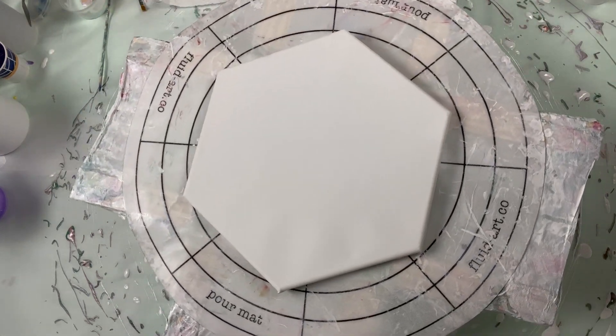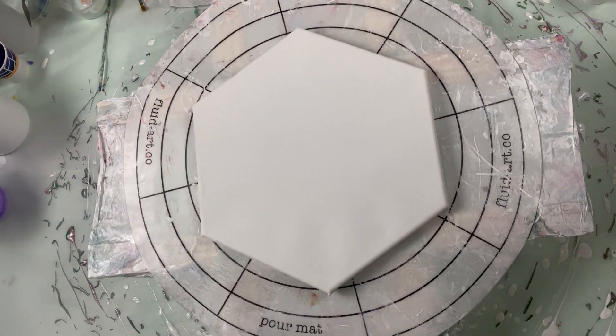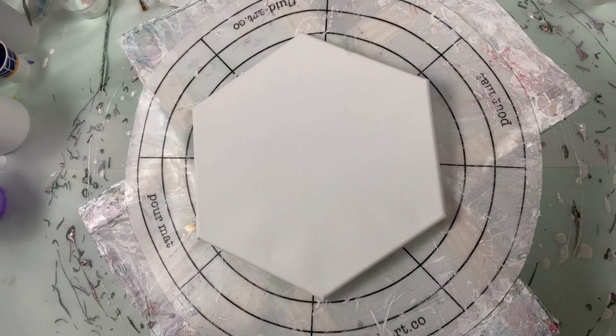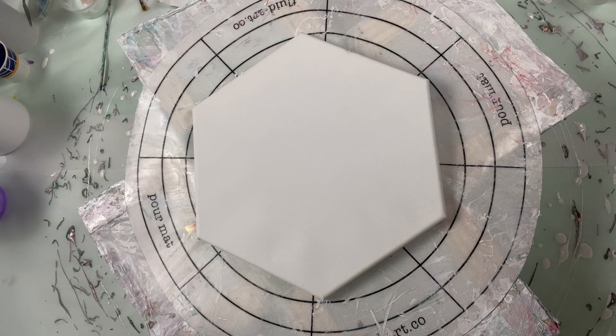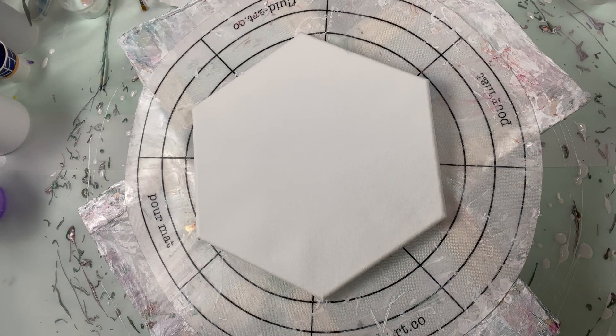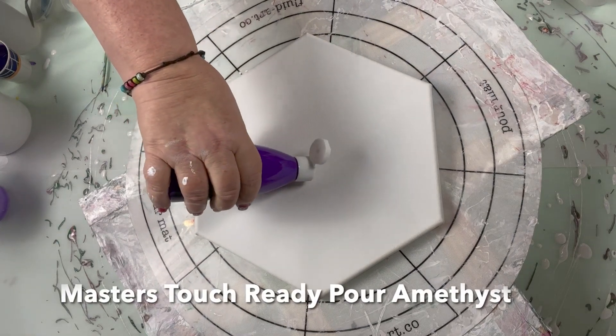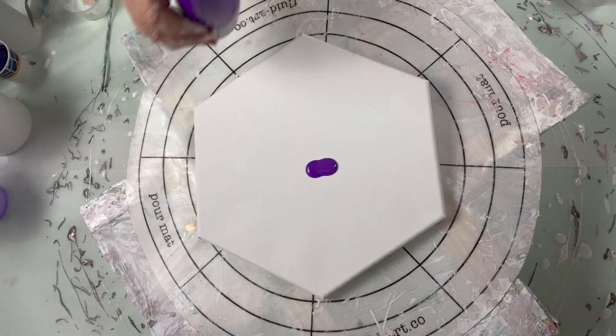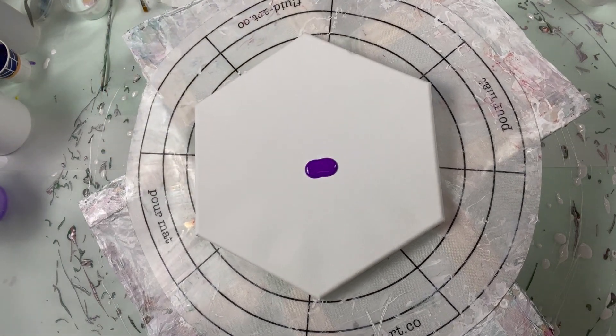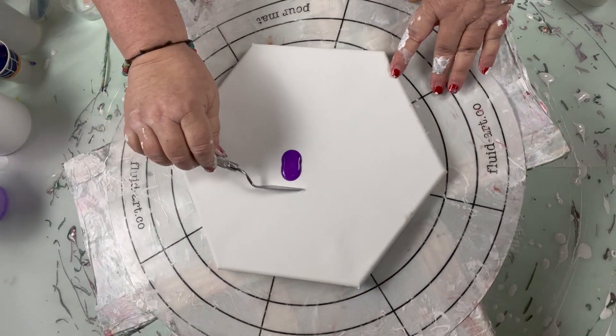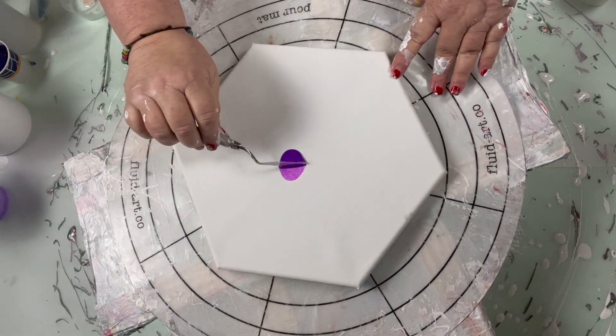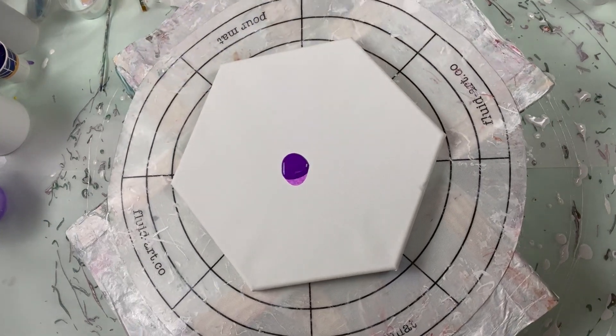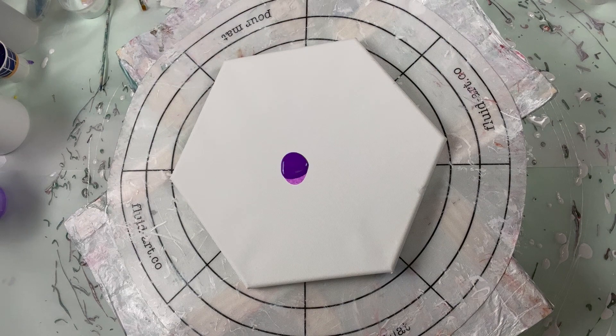I bought a good while back Master's Touch Ready Pour. I am going to start with Amethyst. We're just going to put a little puddle in the middle. I wanted a little puddle in the middle. We'll start with that, but I wanted it smaller.